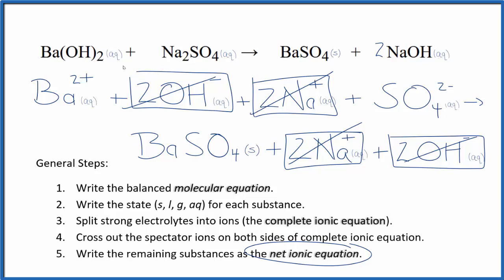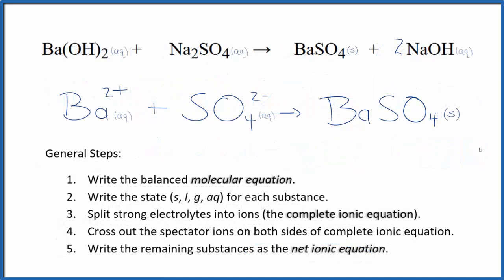What's left is the net ionic equation for Ba(OH)₂ plus Na₂SO₄. Let's remove the spectator ions. This is the balanced net ionic equation for barium hydroxide plus sodium sulfate. You can see that the atoms are balanced and the charge is balanced too — we have 2 plus and 2 minus, which adds up to zero. Net charge of zero in the reactants, and in the products, barium sulfate is a neutral compound with a net charge of zero. So charge is balanced.